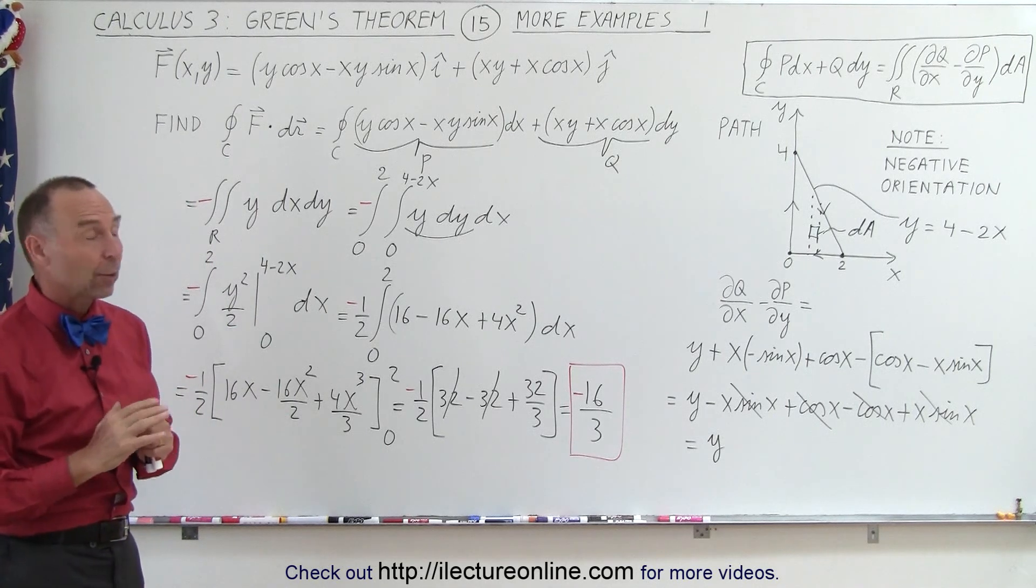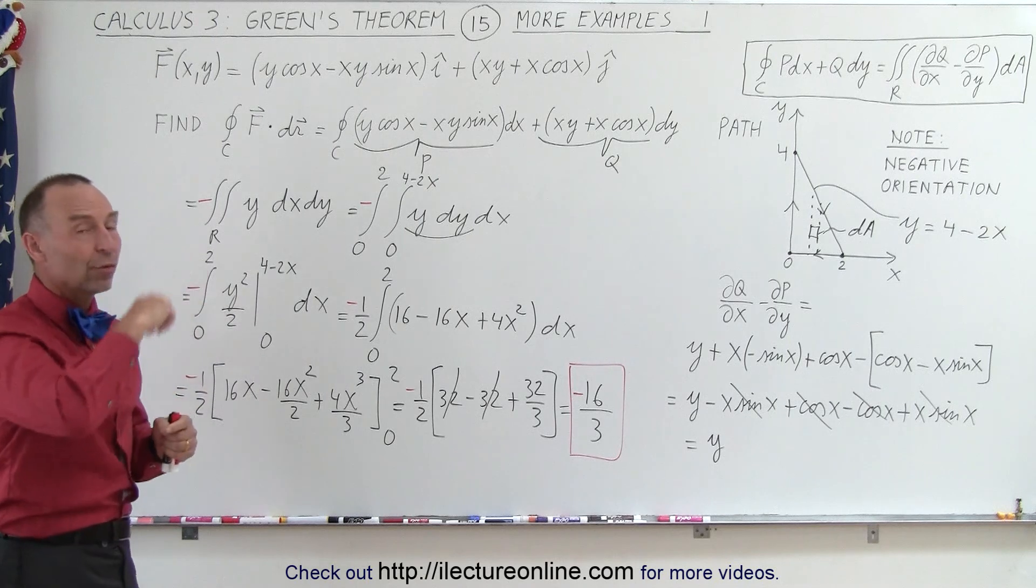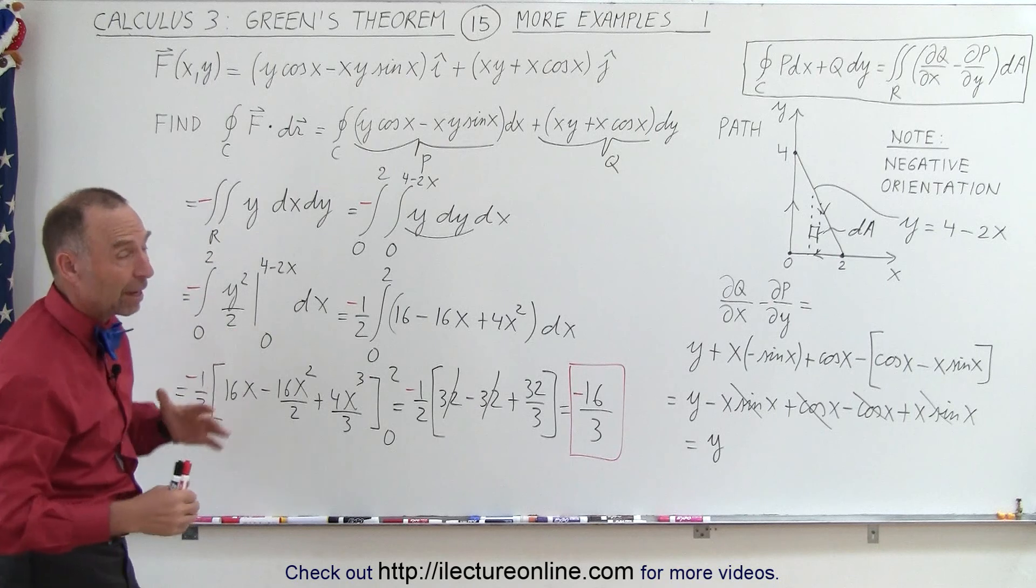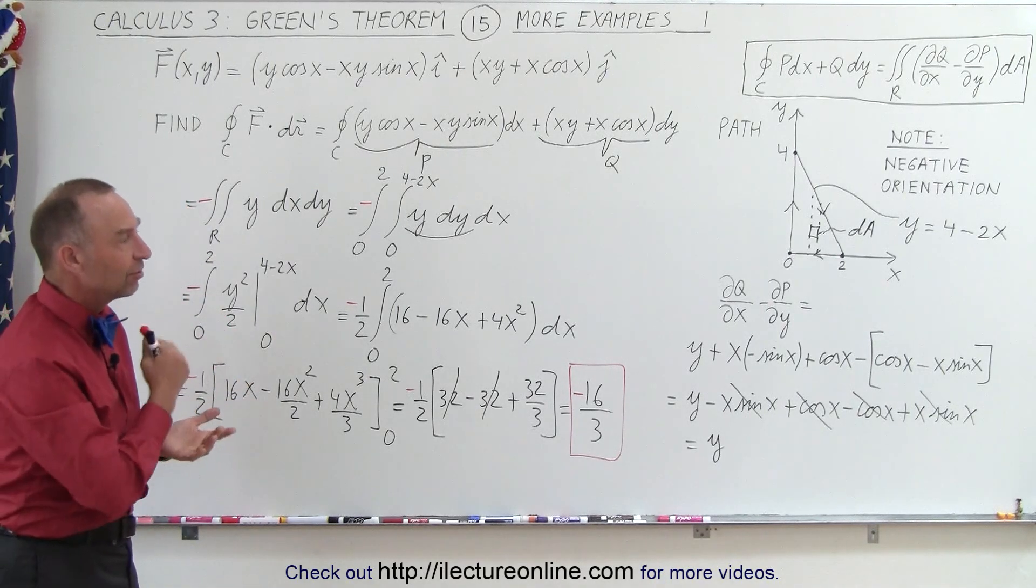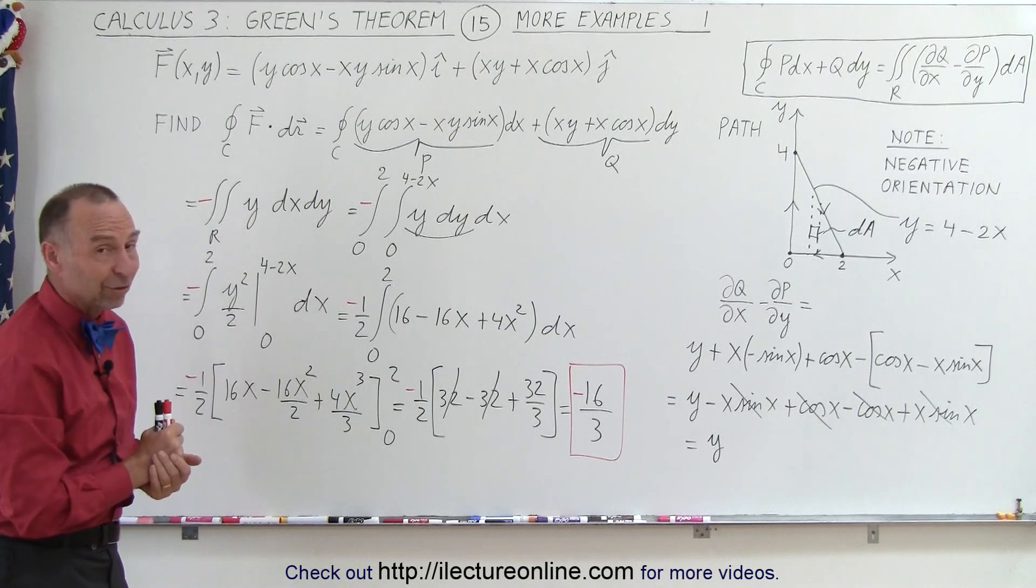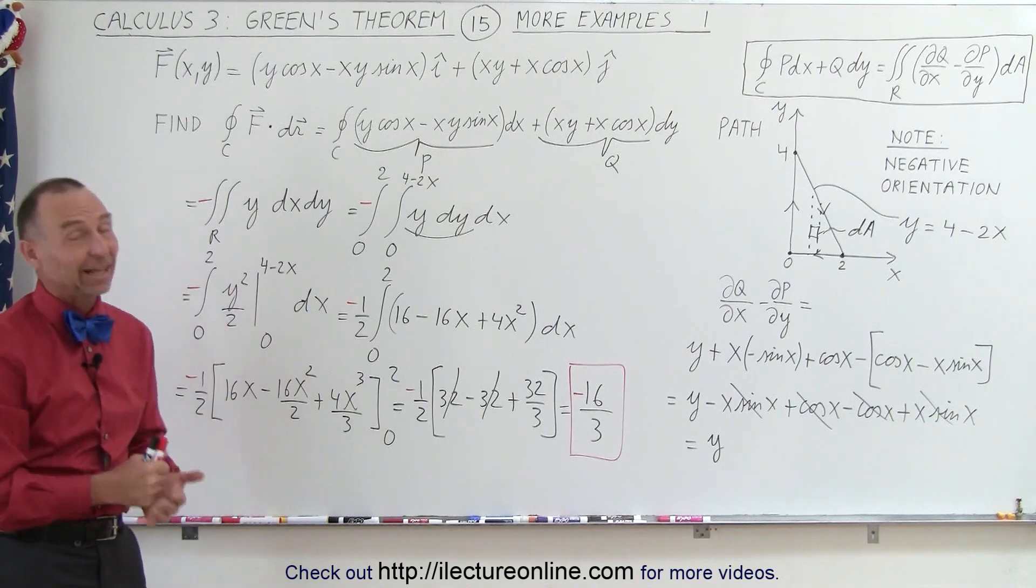So keep in mind that when you use Green's theorem, you really have to realize which direction you're going around the path, and if it's a negative orientation, that you account for that. Now if you do the line integral, that's automatically done. But with the Green's theorem, we just have to be aware of that. And so we can adjust the answer with the negative sign if that is necessary. And that's how it's done.